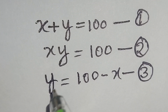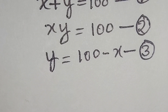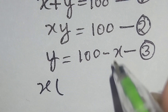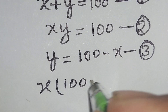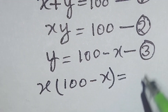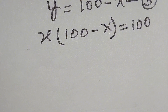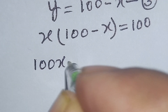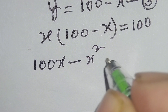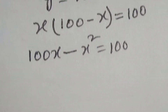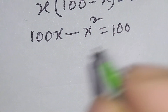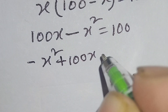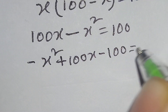Now substitute this value in equation 2. So x times y is equal 100, and y equals 100 minus x. We can write x times 100 minus x equals 100. Expanding: 100x minus x squared equals 100. Rearranging, we get minus x squared plus 100x minus 100 is equal to 0.